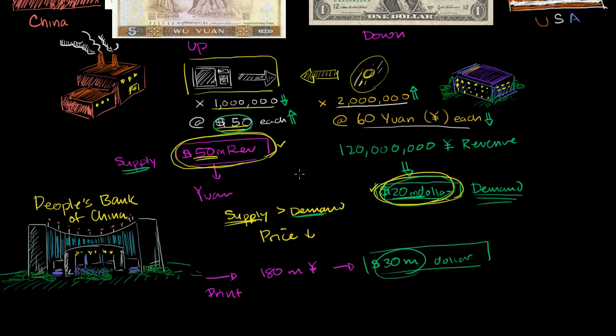So this is clearly a very simplified example. The actual numbers are much larger than in the millions. They're in the hundreds of billions of dollars. But this gives, at least in my mind,